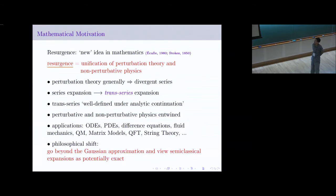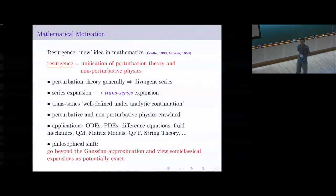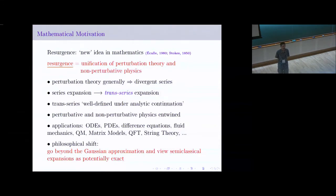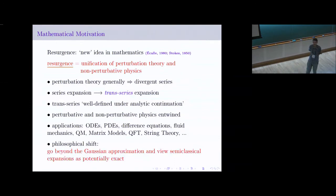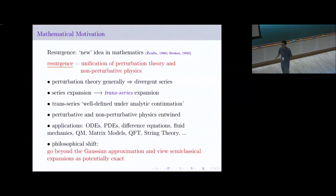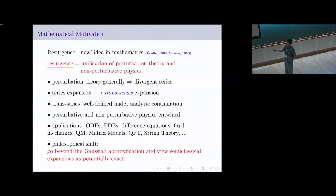Let's recap some basic points. Perturbation theory generally gives divergent series — that's just the way it is. Special cases where perturbation theory truncates or converges are always due to extremely special tunings of parameters and symmetries; the generic behavior is divergent. The first step in resurgence is to replace that series expansion by something more general called a trans-series, which is supposed to be well-defined under analytic continuation, in contrast to a series that only gives information along some particular line in the complex plane.